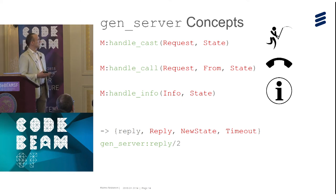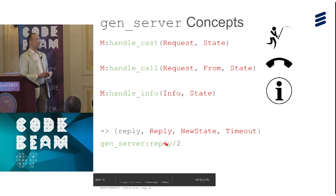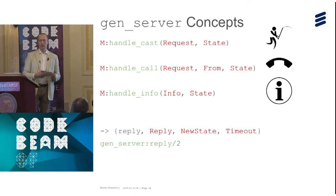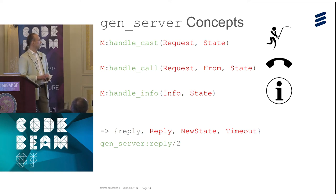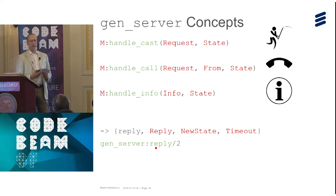gen_server also has the possibility for a call to return a reply directly, and that reply will appear in the sys trace. The sys module is useful for behaviors — you can get the state, activate the trace. This is not the same as the normal trace mechanism; it's built into all gen behaviors for debugging. If you use gen_server:reply instead, it will not show up in the sys trace. There is also a timeout for the next event, which can get longer than expected if a system message is received while waiting.